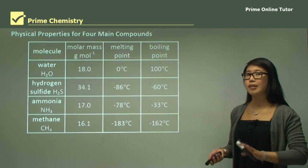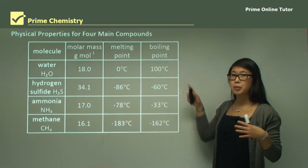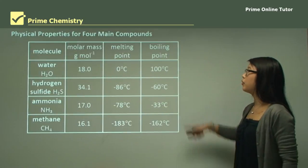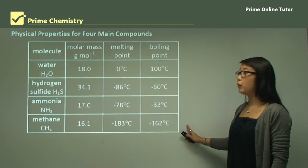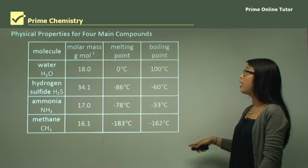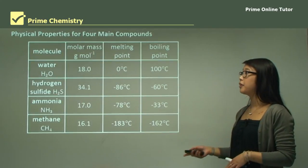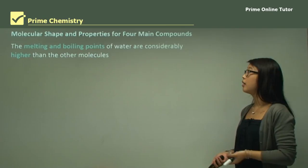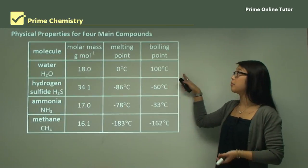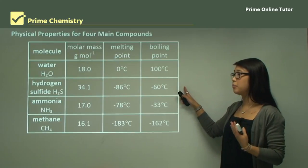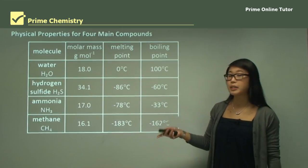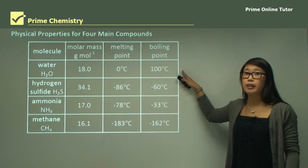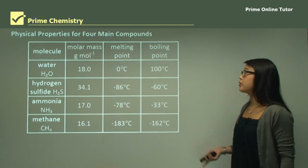Physical properties — can you remember what they are? Things like melting point and boiling point, mainly due to forces between molecules, not within them. Looking at this table with four sets of molecules, their mass in grams per mole, and melting and boiling points: water's melting point is 0°C and boiling point is 100°C. But similar-sized molecules are in the minus range in degrees Celsius — so why does water have such a high melting and boiling point? That's what we'll be answering today.